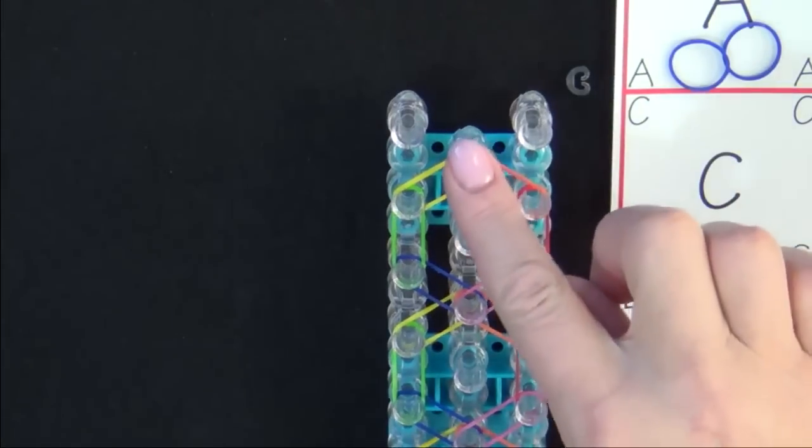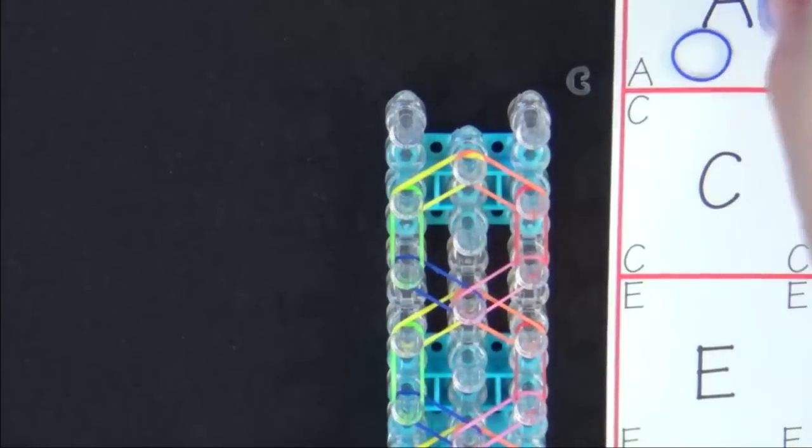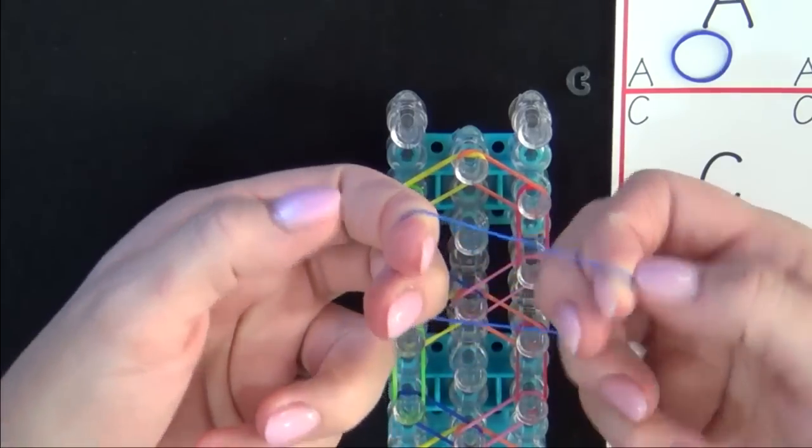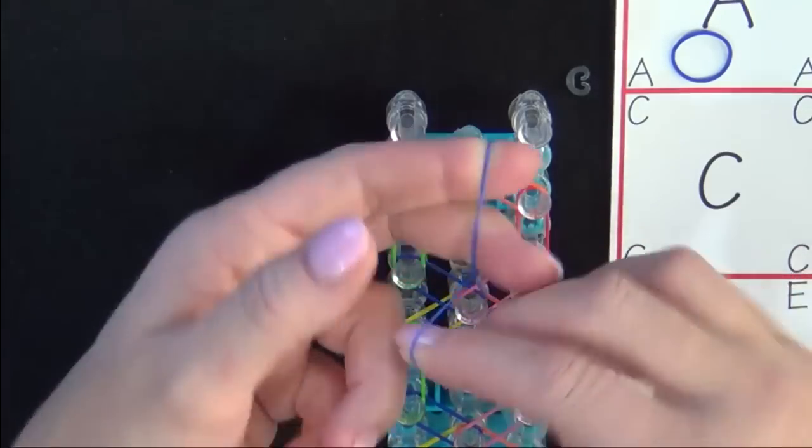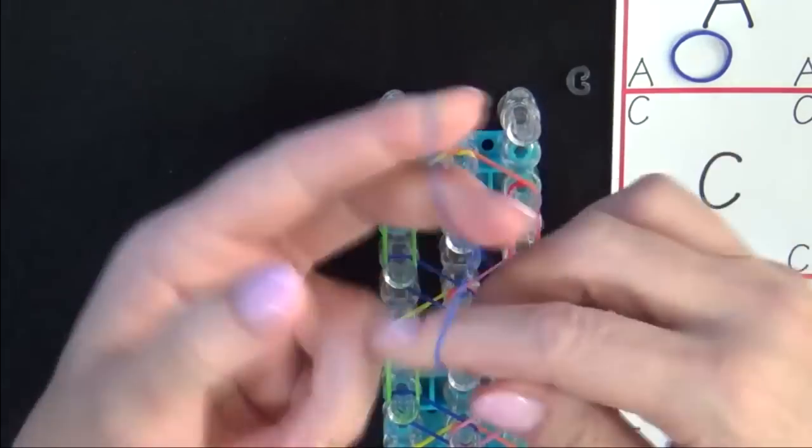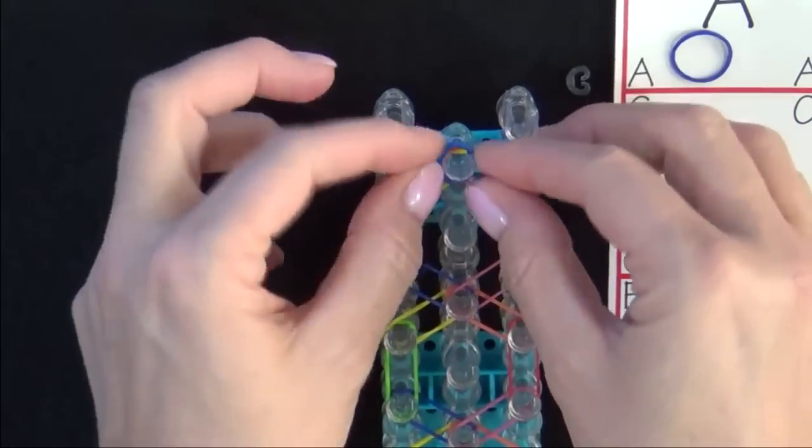Once you've reached the end of the loom, place an A colored cap band on that last pin. You'll grab an A colored band, put 2 fingers in each side, twist it into the figure 8, then loop it back upon itself and place it on that last pin.